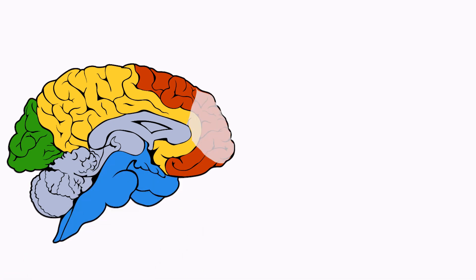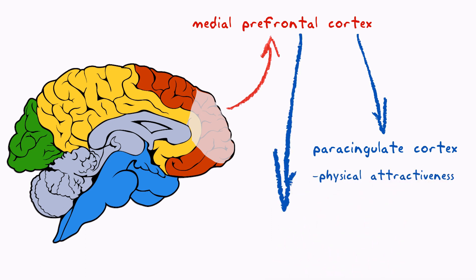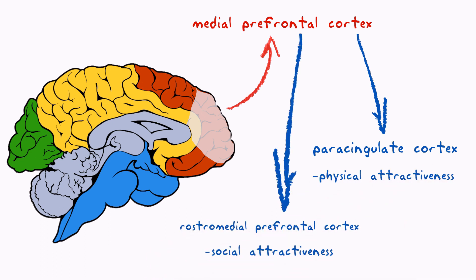These findings show that in the first few milliseconds of meeting someone, physical attractiveness is evaluated by the paracingulate cortex, and the rostromedial prefrontal cortex is responsible for making deeper judgments about the other person's social compatibility. That maybe proves there is such a thing as love at first sight.